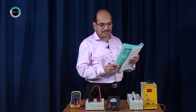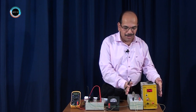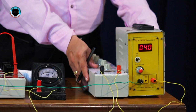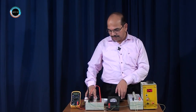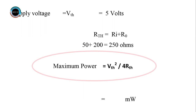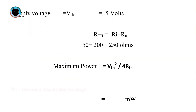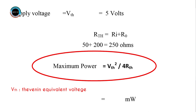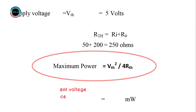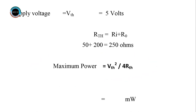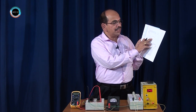The internal resistance of the source is nothing but the resistance of this particular source along with the series resistor. Theoretically, the maximum power delivered is Vth squared divided by 4Rth, where Vth is the Thevenin equivalent voltage and Rth is the Thevenin resistance. Substituting: Vth is 4 volts, and Rth — the Thevenin resistance of 200 ohms plus the 50 ohm internal resistance — gives a total of 250 ohms.